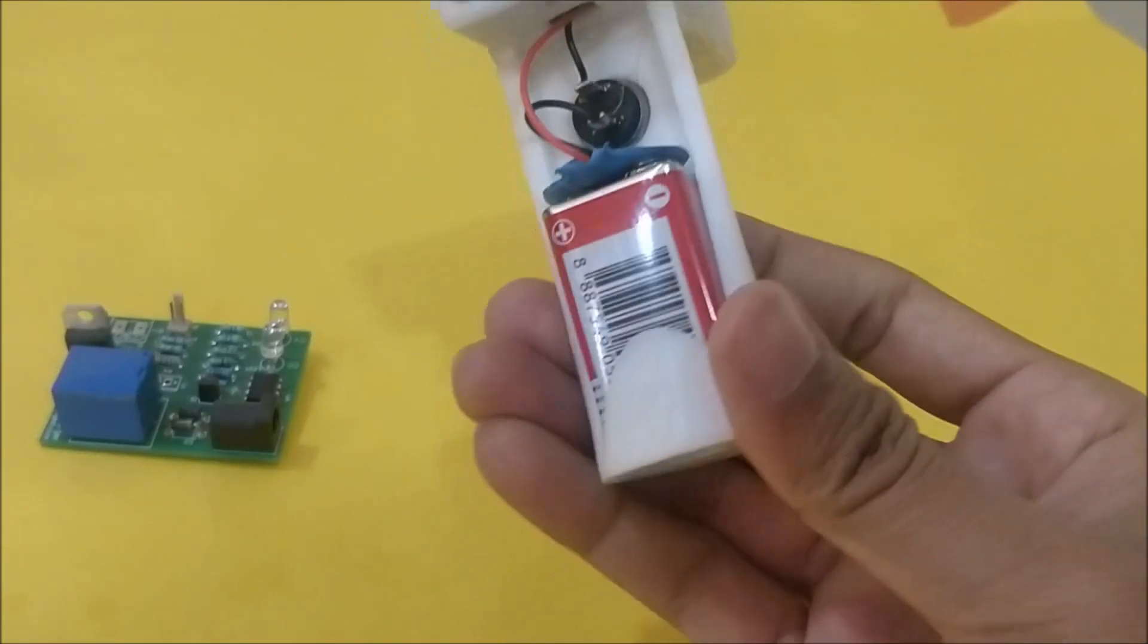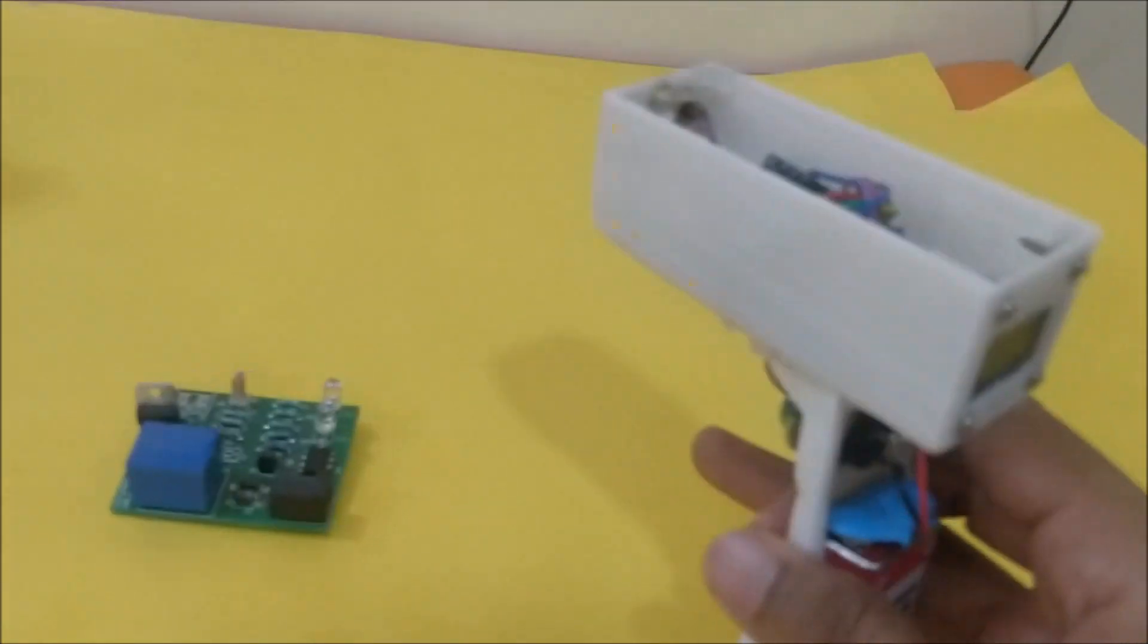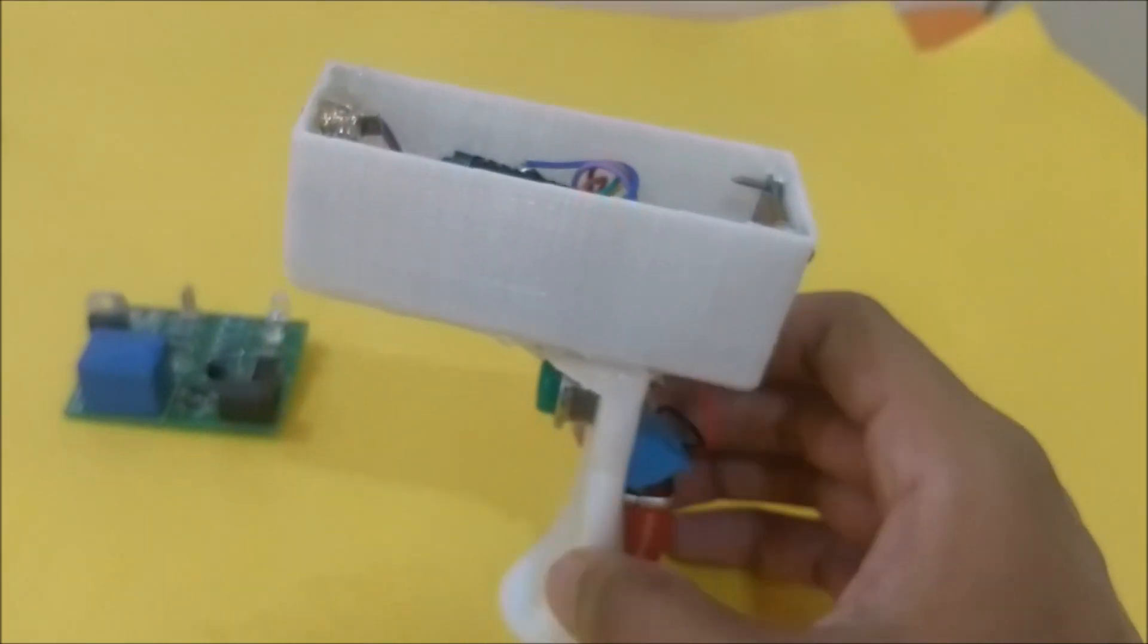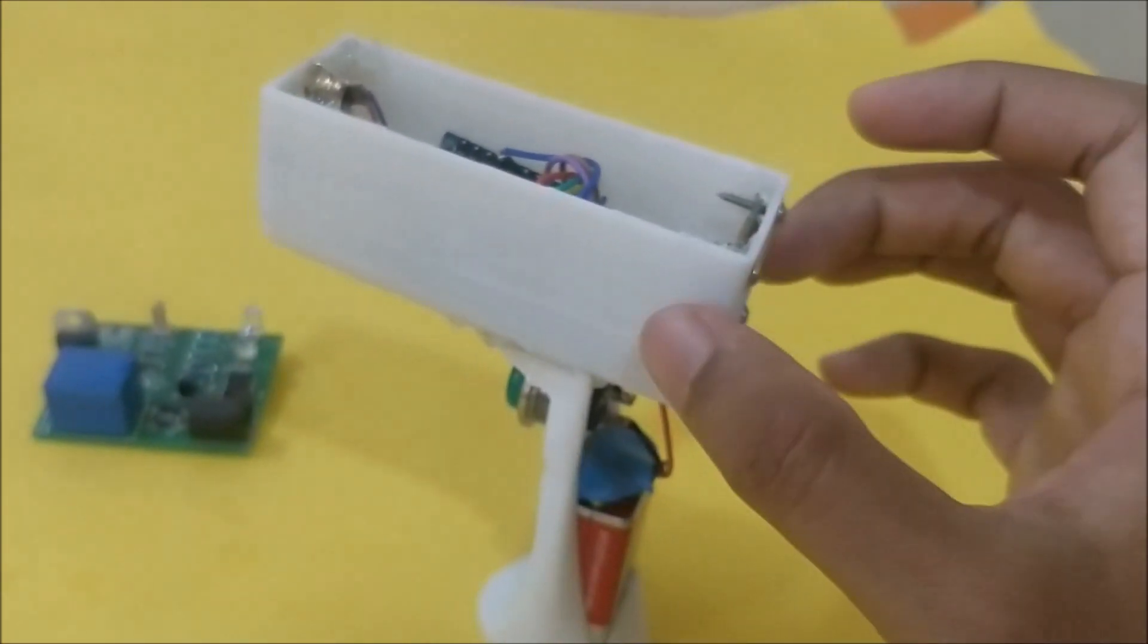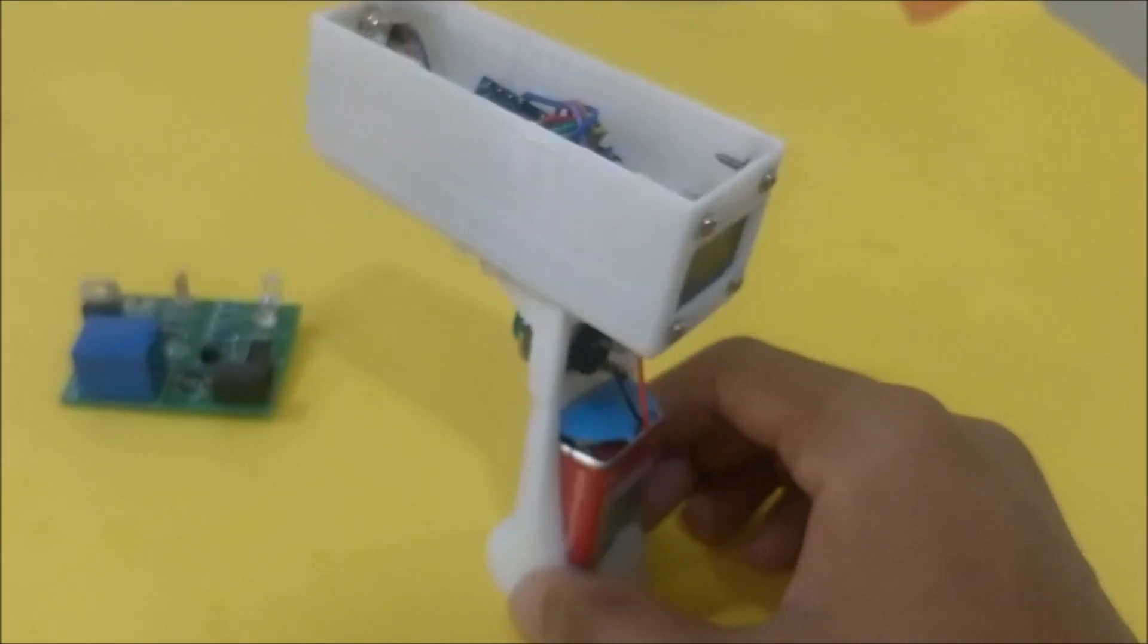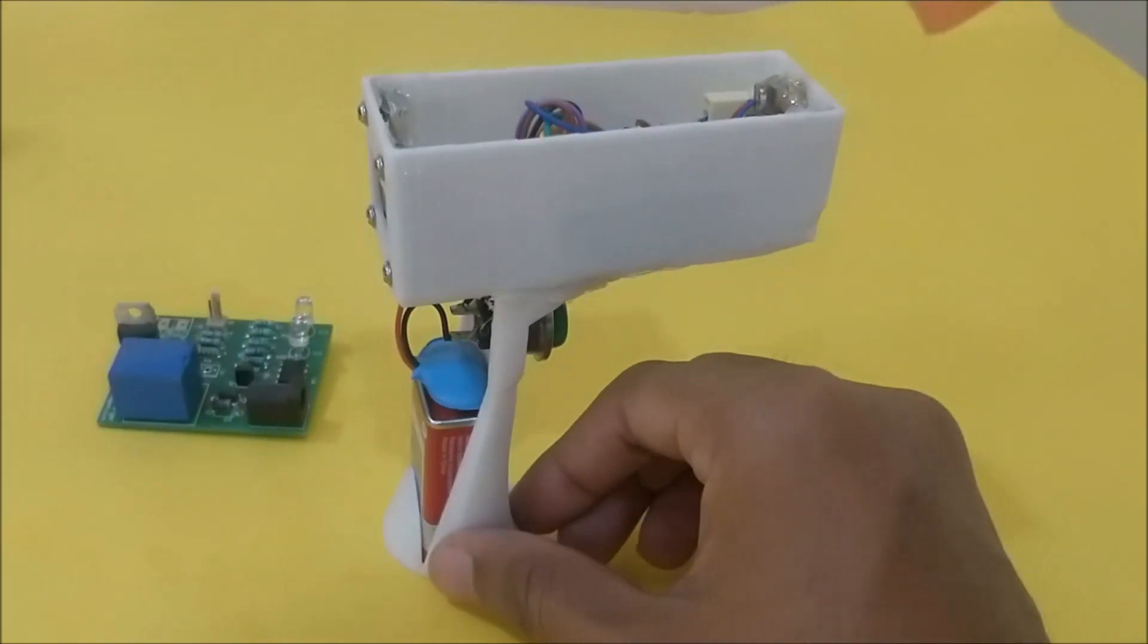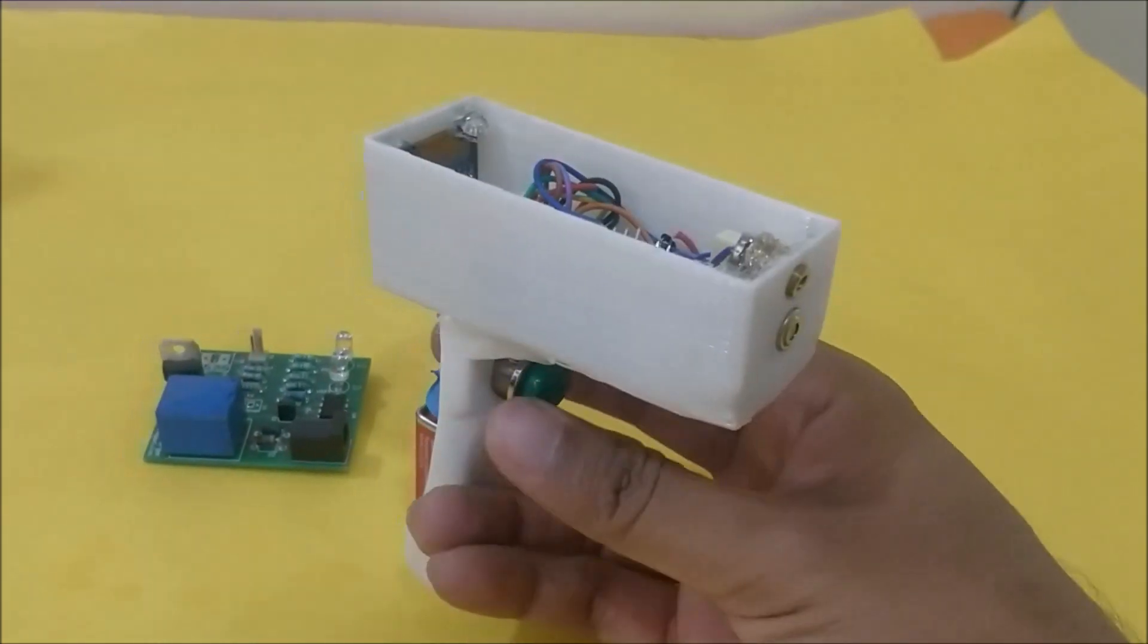The complete circuit diagram, the code for the Arduino board, as well as the 3D design of this enclosure can be found at the link given in the description of this video. This project is ready to work. If you press the button, you can see the circuit getting triggered.